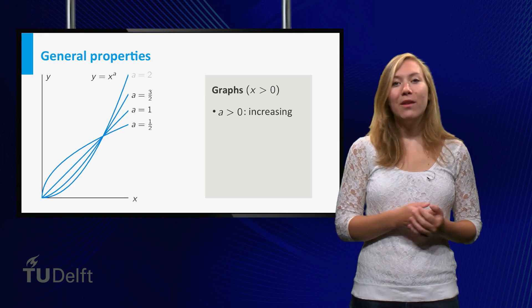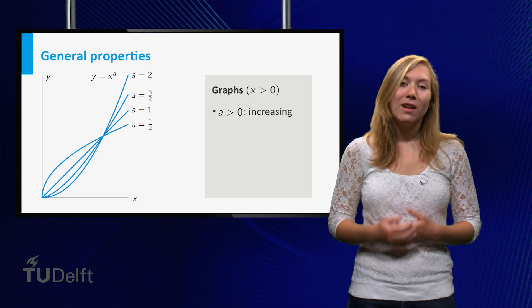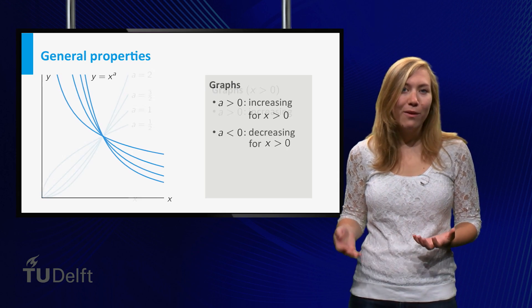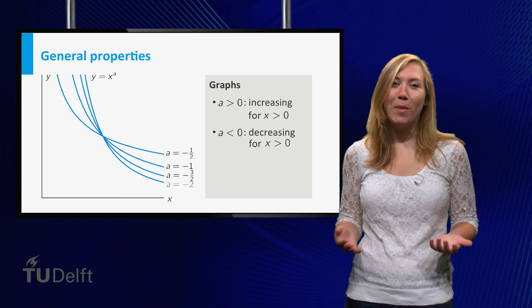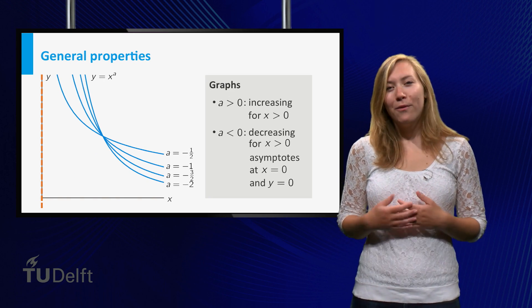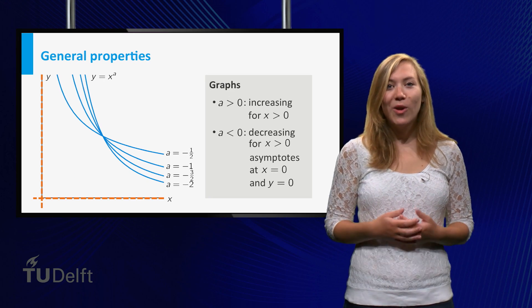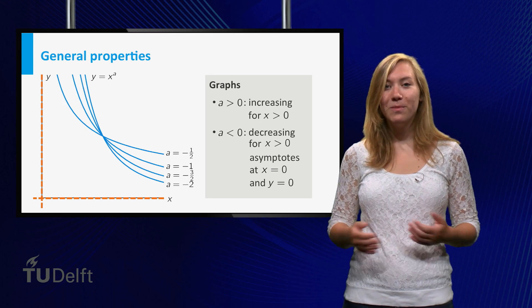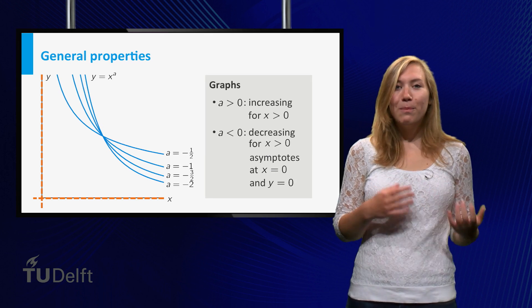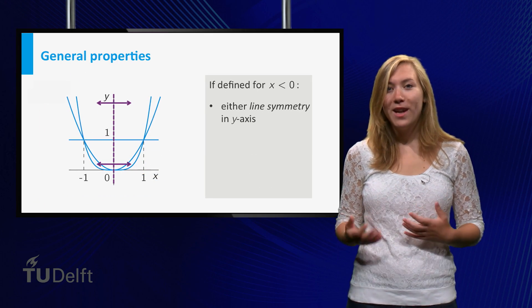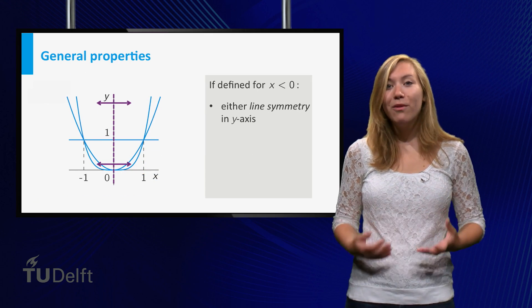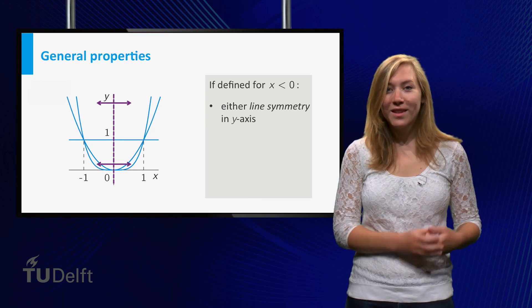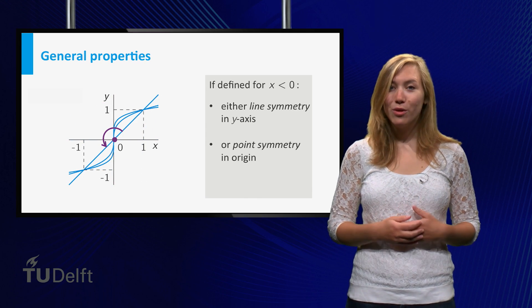As for the graphs, if a is positive, they are increasing for positive x. If a is negative, the graph decreases for positive x. Furthermore, in that case, the graphs have asymptotes along the horizontal and vertical axes. If the power functions happen to be defined for negative x as well, the graph has symmetries. It is either line symmetric in the y-axis or point symmetric in the origin.